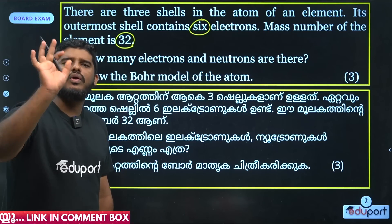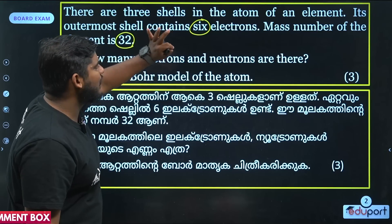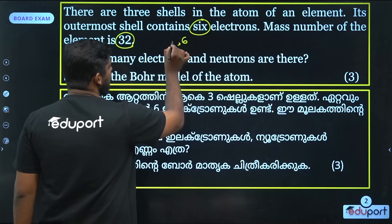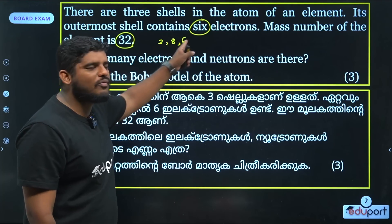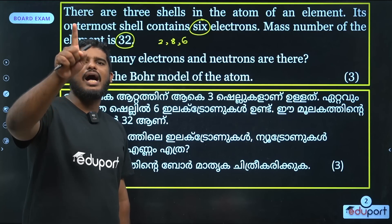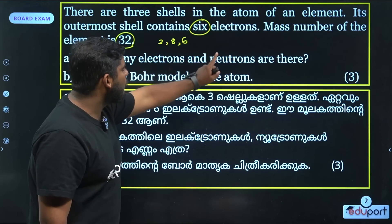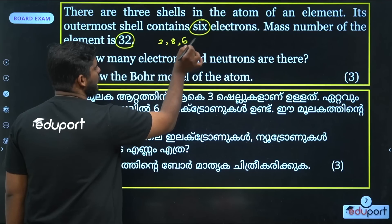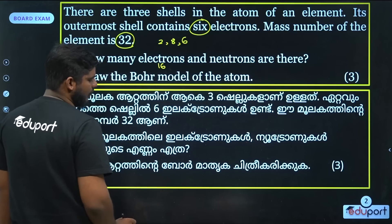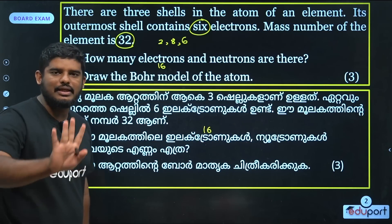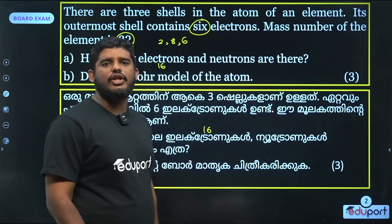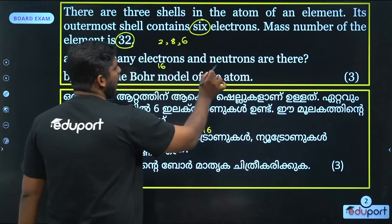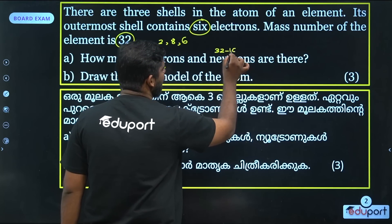Now, we are going to find electrons and neutrons. The neutrons question is: mass number minus atomic number. The atomic number equals the electron number. The number is 32, then neutrons which are 32 minus 14.